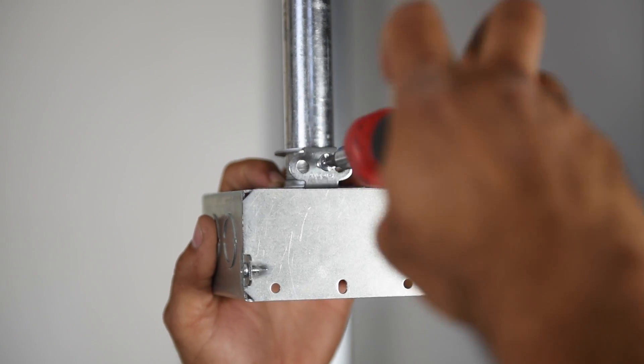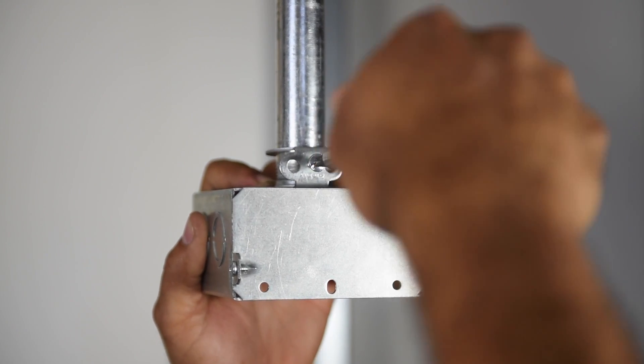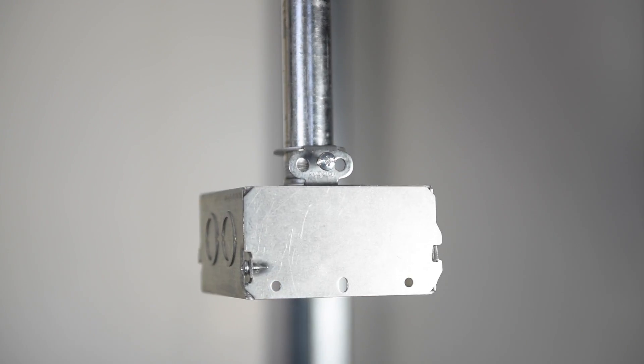Then tighten the set screw to secure the CLCSL to the conduit. This can be done before or after the junction box is attached.